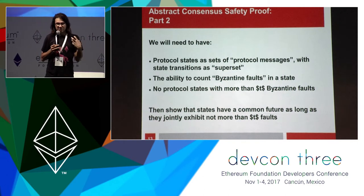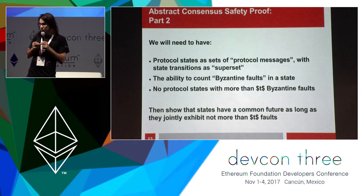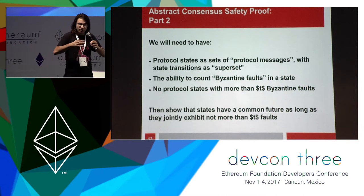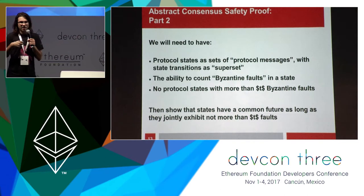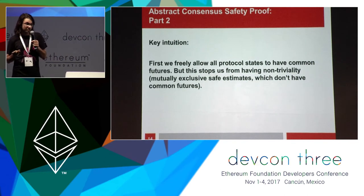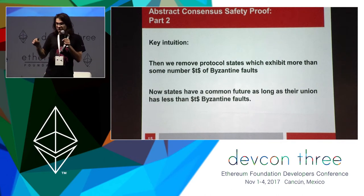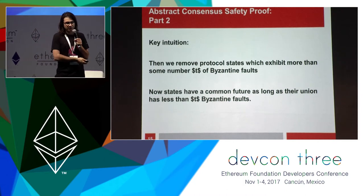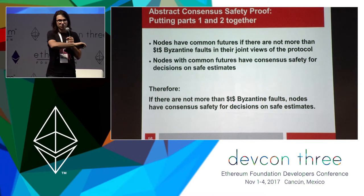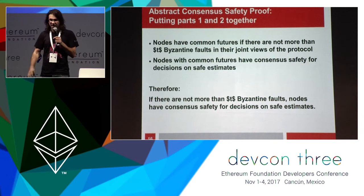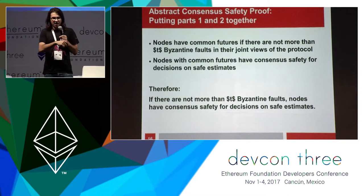That was the first part of the proof: if nodes have a common future then they have consensus safety. The next part is a construction to make sure they will have a common future unless there are more than some number of Byzantine faults. Protocol states are messages; state transitions correspond to receiving messages — going to supersets of protocol messages. If we count Byzantine faults and exclude sets of messages with too many faults, we can guarantee a common future. Two states will have a common future unless there are too many Byzantine faults, giving us our key result: as long as there aren't too many Byzantine faults, they have consensus safety. Almost nothing needed to be said about the specific consensus protocol itself.